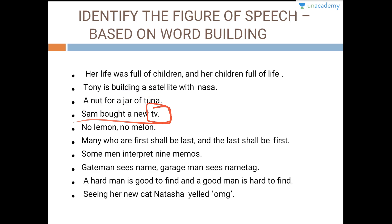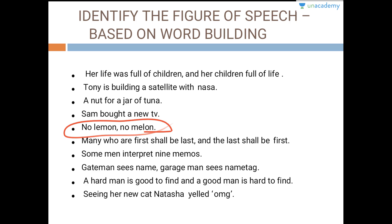No lemon no melon — if you read it the other way by reversing the entire word alphabet by alphabet, it again comes as 'no lemon no melon,' so it is an example of palindrome. Many who are the first shall be last, and the last shall be the first — this is an example of chiasmus.